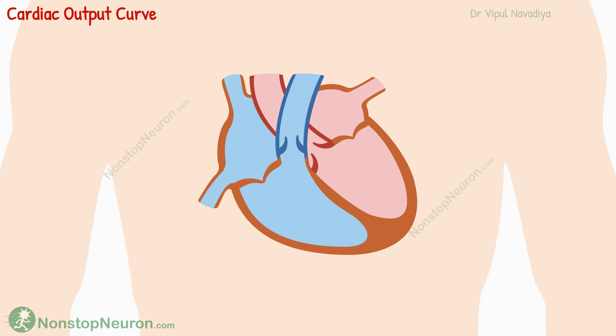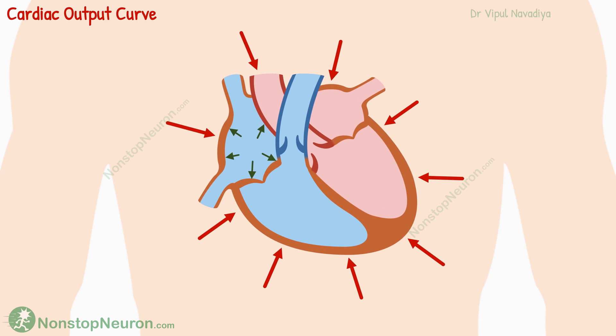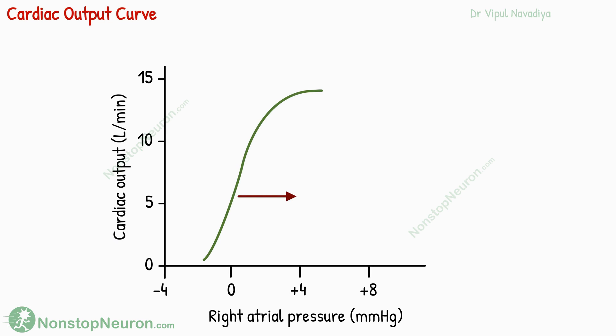Now let's see the effect of changes in external pressure on the heart. The pressure in the chest cavity compresses the heart. An increase in this pressure opposes the filling of the cardiac chambers, and according to the Frank-Starling mechanism, lesser filling means lesser cardiac output. To overcome this, right atrial pressure also needs to increase. In short, to achieve the same cardiac output, we now need more right atrial pressure. In the graph, this appears as a shift towards the right.